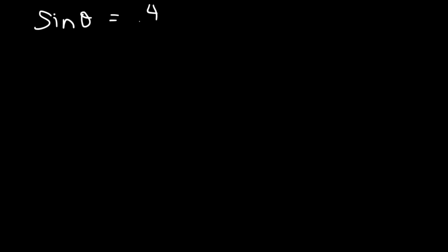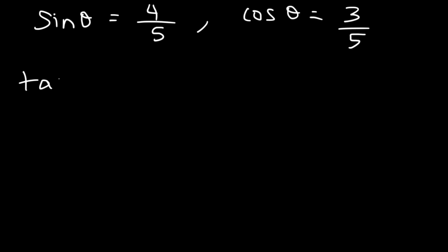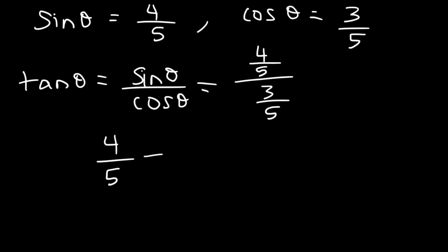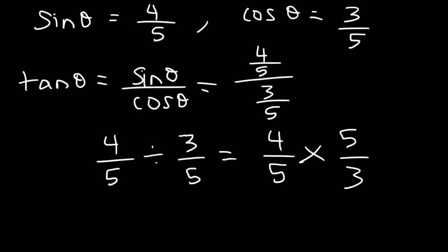So let's say if sine theta is 4 divided by 5 and cosine theta is 3 over 5, what is the value of tangent theta and cotangent theta? Tangent is simply sine divided by cosine, so it's 4 over 5 divided by 3 over 5. You can use keep-change-flip: keep the first fraction, change division to multiplication, and flip the second fraction. You're going to get 4 over 3 as your answer.